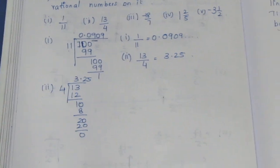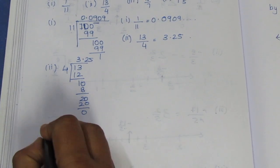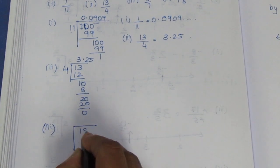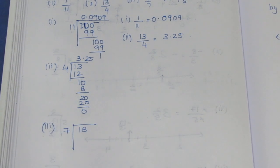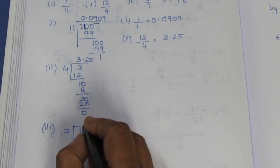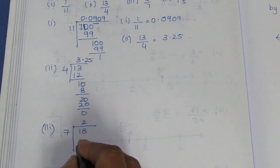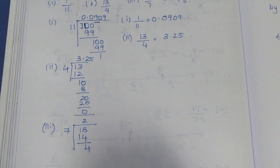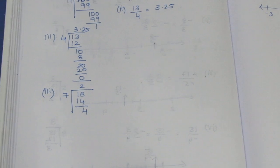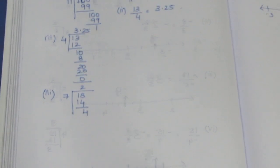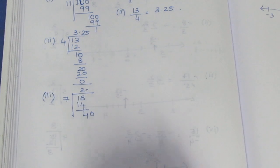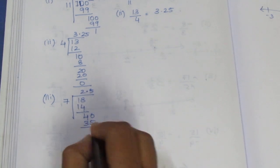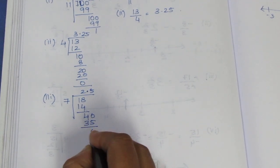Now let's go to the third sum. The third sum is minus 18 by 7. The minus sign — we work with 18 divided by 7. Now 7 ones are 7, 7 twos are 14. So 7 twos are 14, let's stop. Remainder 4. Decimal point, bring down 0. Now 7 fives are 35.